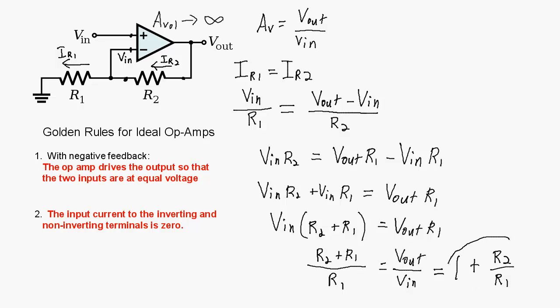That gives us 1 plus R2 over R1. So again, this is the voltage gain of the non-inverting amplifier circuit, which generically looks like this, as long as the open-loop voltage gain of our amplifier approaches infinity or at least is really big. I hope you learned something about non-inverting amplifier configurations with operational amplifiers, and I'll see you in the next video.